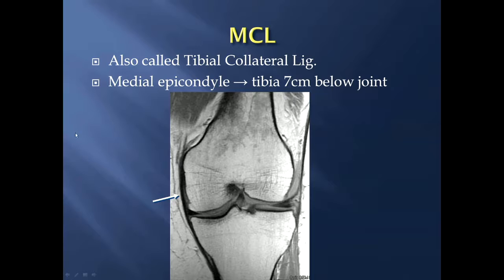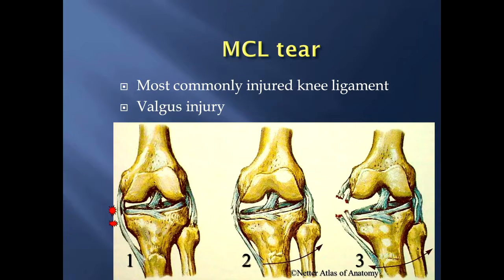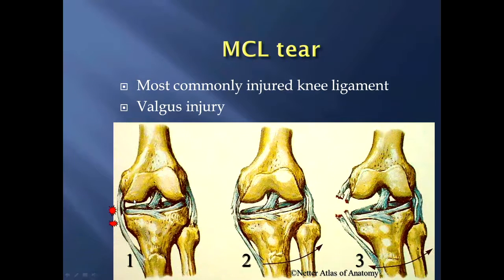Moving on to the medial collateral ligament, also called the tibial collateral ligament because its distal insertion occurs on the tibia. The MCL arises from the medial epicondyle, and its insertion is about 7 centimeters below the joint line. This is the most commonly injured knee ligament, and it occurs due to a valgus injury where the tibia is angled out laterally, causing stretch on the MCL. It's broken into three main types: grade 1 sprain — probably the single most common MCL injury — grade 2 partial tear, and grade 3 complete tear.